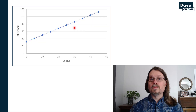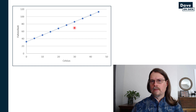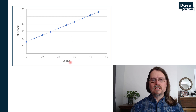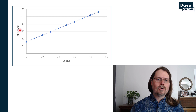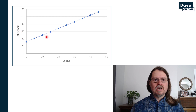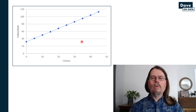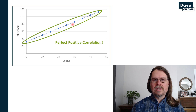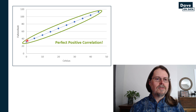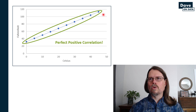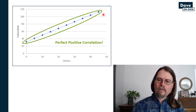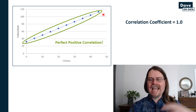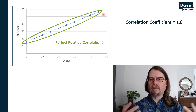Here we are with some sample data. This is a contrived example, but I wanted to set the frame of reference. You can see degrees Celsius on the x-axis and degrees Fahrenheit on the y-axis. From previous videos, we know this is an example of perfect positive correlation — all of the data points on this scatter plot are in a straight line going from the lower left to the top right. The correlation coefficient for this data is one, the highest positive value you can get.